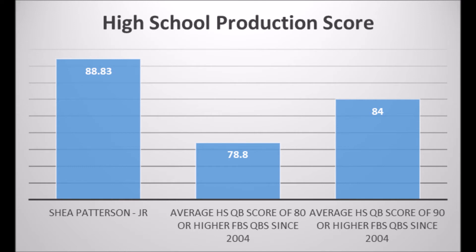The high school production score is not about how well a quarterback did in high school based on their entire career, as much as what was their best season statistically when it comes to data. Shea Patterson's best season was 88.83. Based on all the data I have collected since 2004, this means he has a very good shot of eventually developing into an 80th or 90th percentile quarterback.